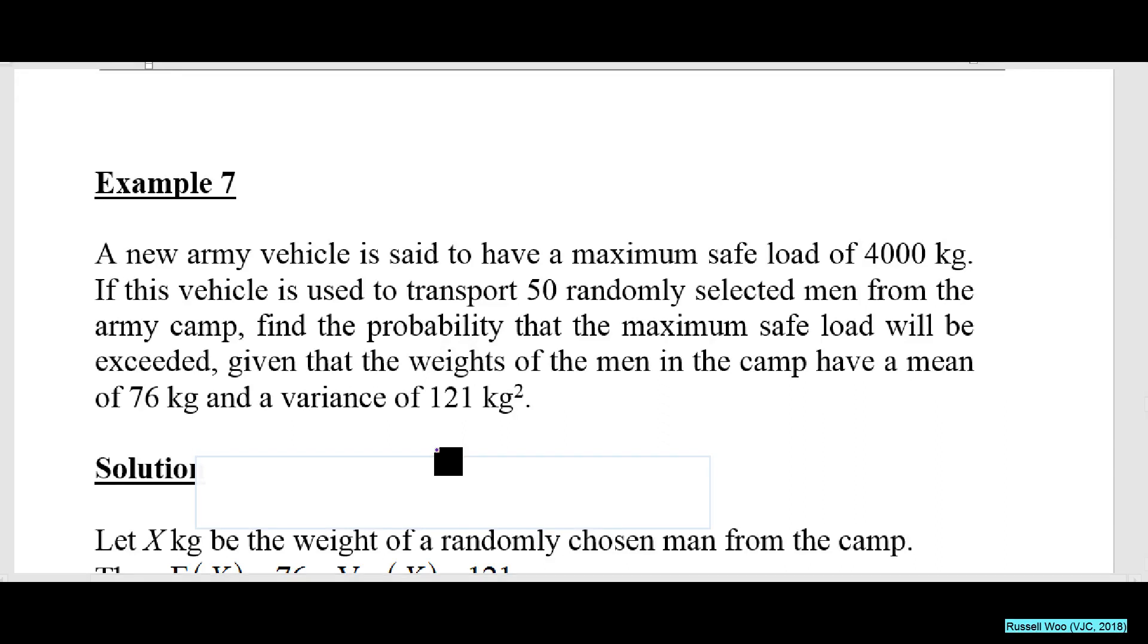A new army vehicle is said to have a maximum safe load of 4000 kg. If this vehicle is used to transport 50 people, now the weight has a mean of 76 kg and variance of 1.21 kg². The weight of one man has mean of 76 kg.